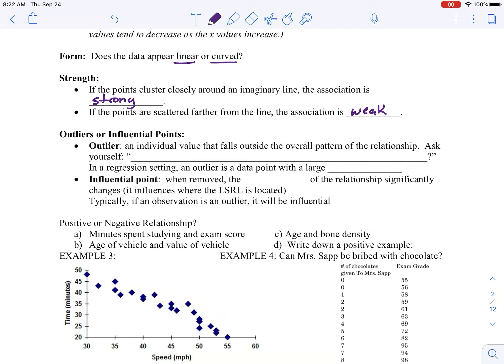Outliers or influential points? An outlier, an individual value that falls outside the overall pattern. You're going to ask yourself, is there a striking exception to the pattern? In a regression setting, an outlier as a data point, and we haven't got into residuals yet. Then, I'm going to disagree with this statement. But, this was in the notes, I'll keep it there, with a large residual. So, an influential point is a point that if we removed it, the slope of the regression line will change.